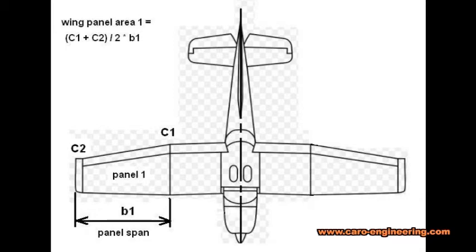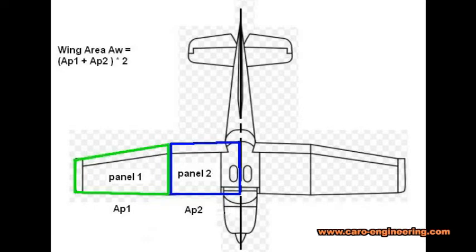The full wing area is therefore the sum of all the areas of all the separate panels. If the wing is symmetric left and right, we just add the panel areas on one side and multiply by 2. In this way, you can calculate the wing area even if the planform shows multiple tapers.